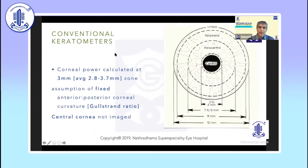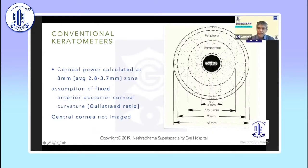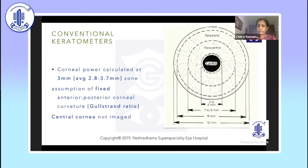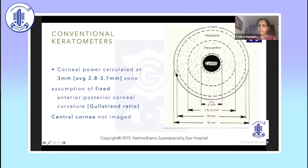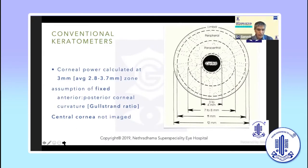With conventional keratometers, the corneal power is calculated in the 3 mm zone — on average, 2.8 to 3.7 mm — with the assumption of a fixed anterior-to-posterior corneal curvature ratio. The central part of the cornea is not imaged, and after refractive surgery, whether myopic or hyperopic, the central area curvature is changed maximally, and the rate of change of slope from center to periphery is altered.